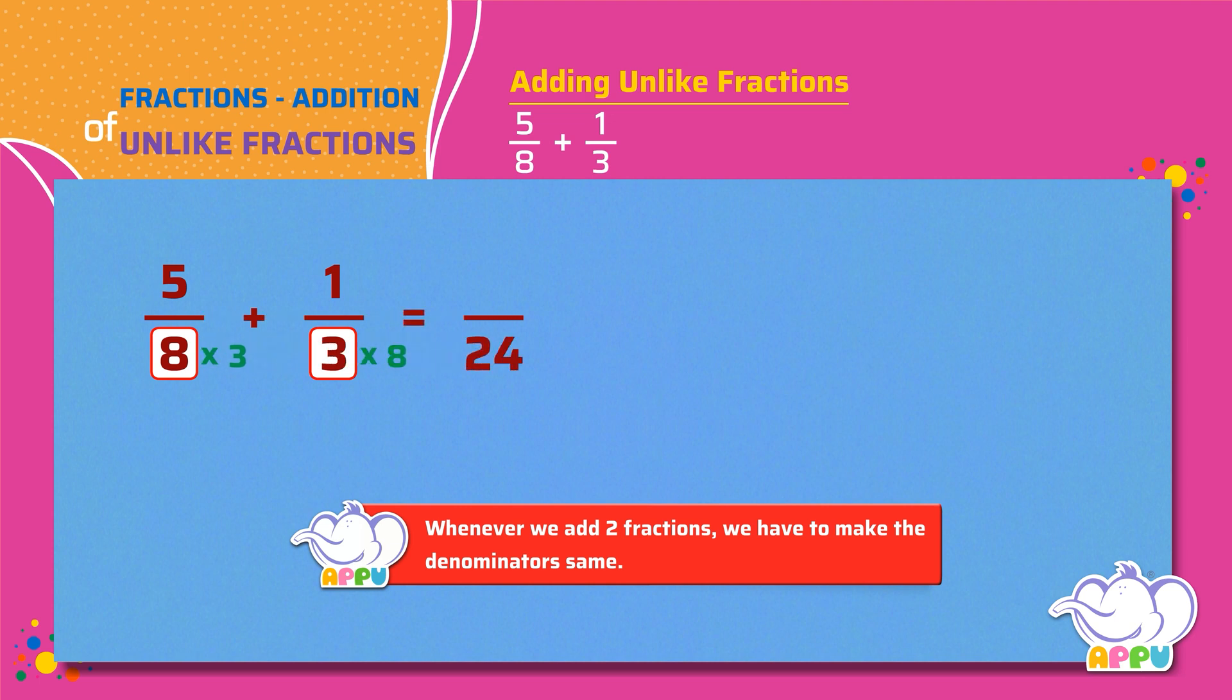Since we multiply the denominator of the first fraction by 3, we multiply the numerator with the same number. That is 5 times 3. We get 15 by 24.